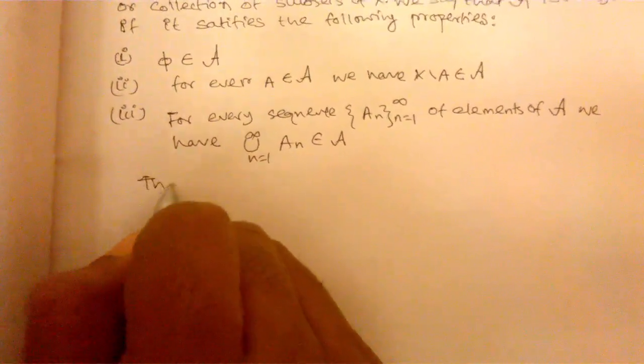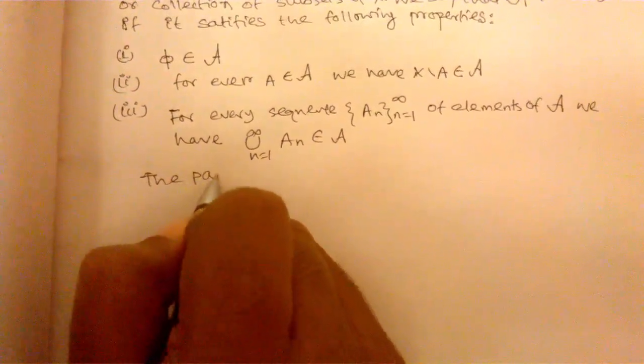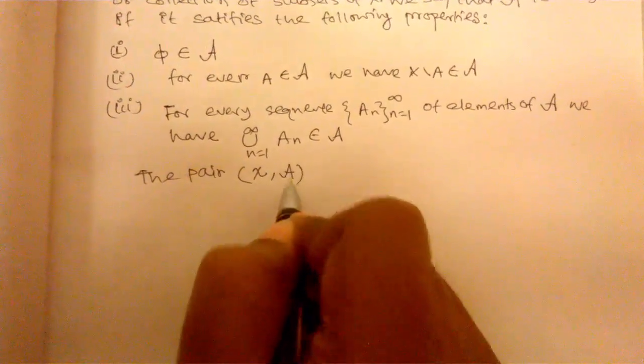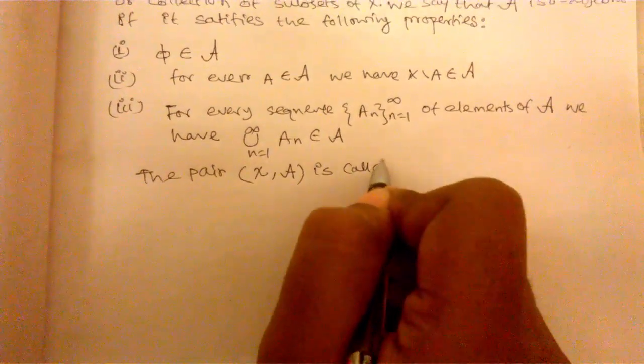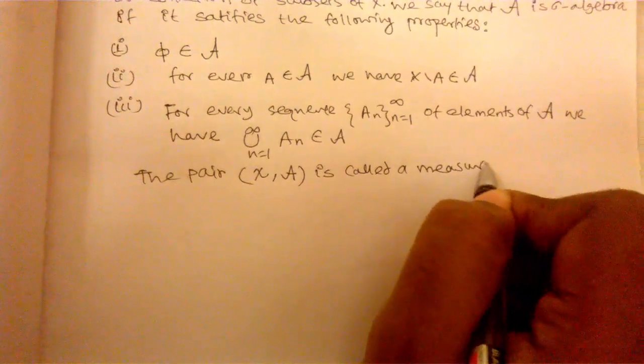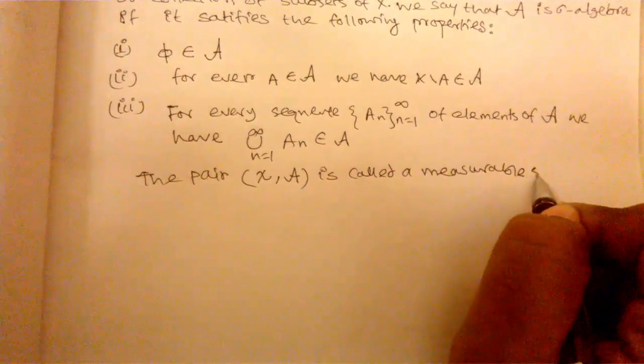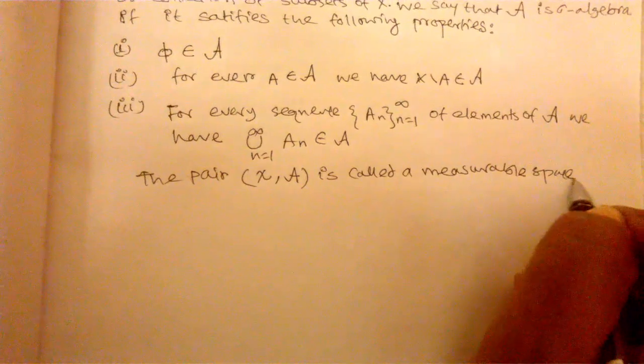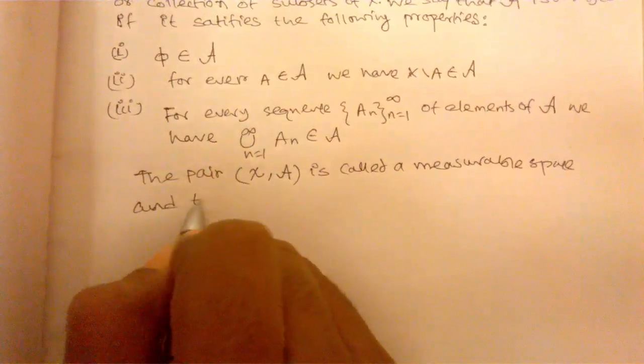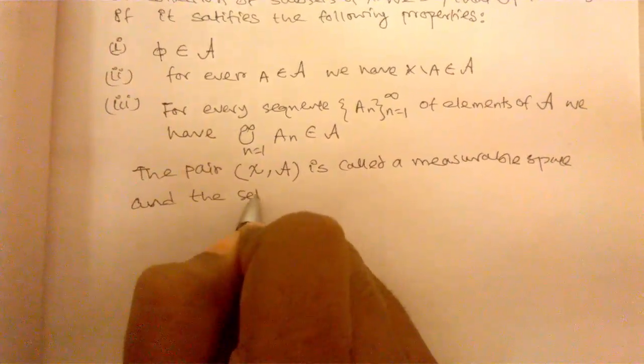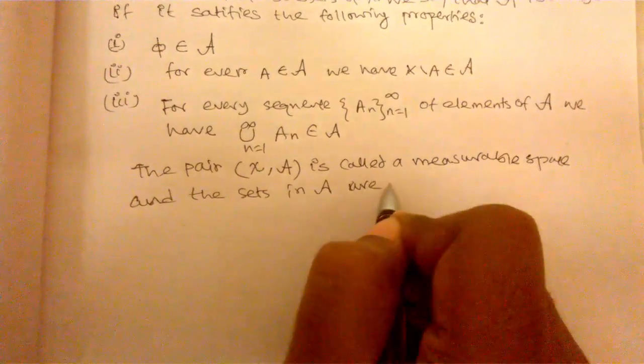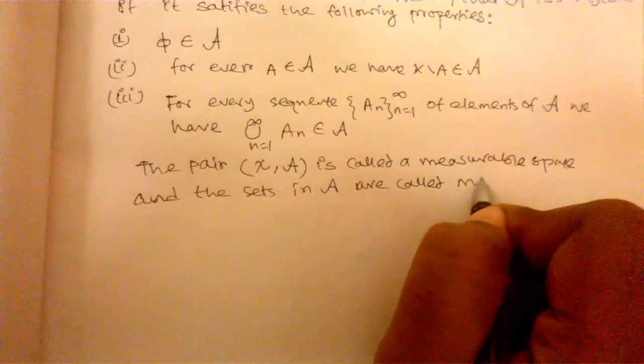The pair (X, A) is called a measurable space, and the sets in A are called measurable sets.